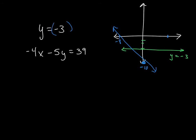And my other line looks approximately like this. The same idea is true. I'm taking that negative 3 and plugging it in for y. And now I have negative 4x minus 5 times negative 3 is equal to 39.